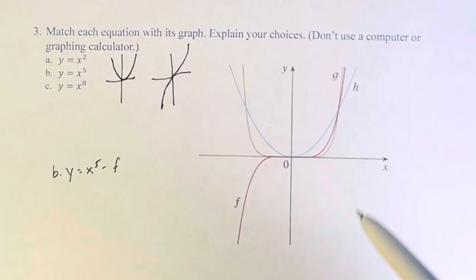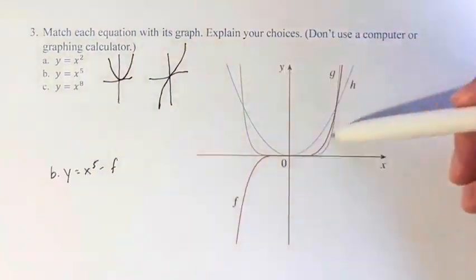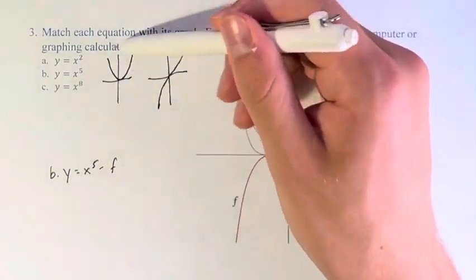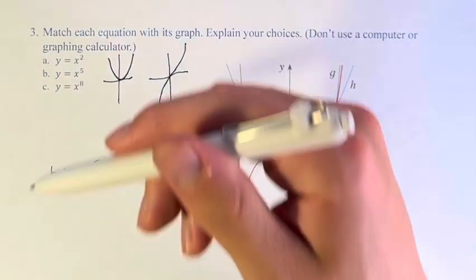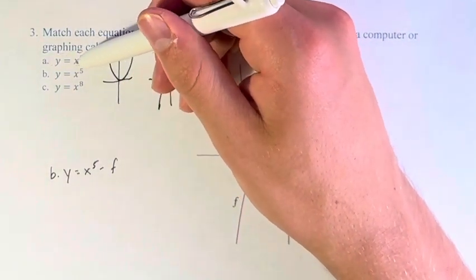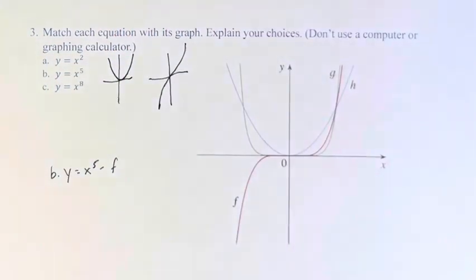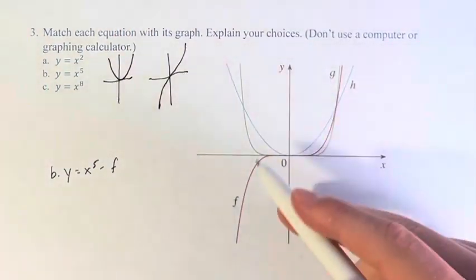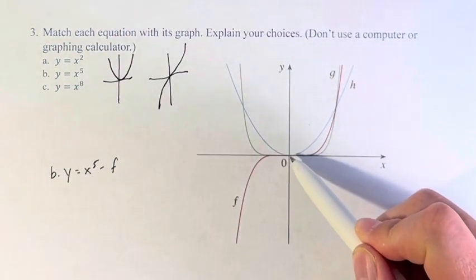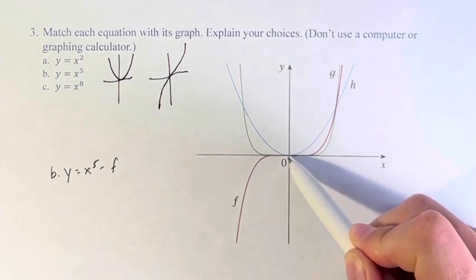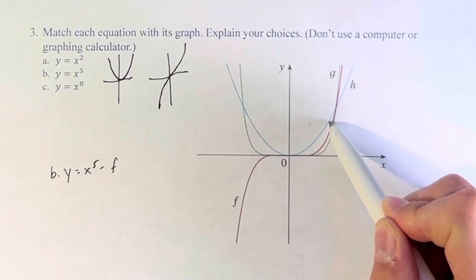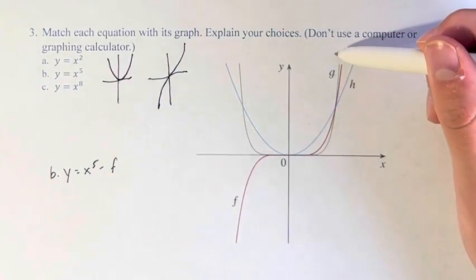Now, how do we determine h and g? They both have this general shape, just slightly different. Well, the difference between y equals x squared and y equals x to the eighth is one of them has to be larger at the start, right? At the beginning, when we're close to zero, h is greater than g. After a certain point, g becomes greater than h.